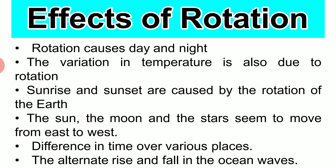Third, sunrise and sunset are caused by the rotation of the earth. Earth rotates from west to east. The part of the earth that moves from darkness into the sun's rays experiences sunrise, and when it moves away from the sun's rays, it experiences sunset.